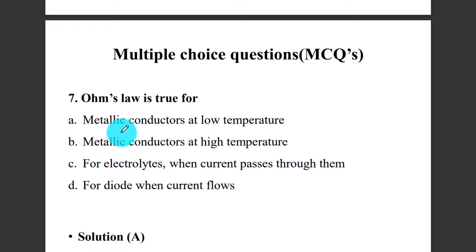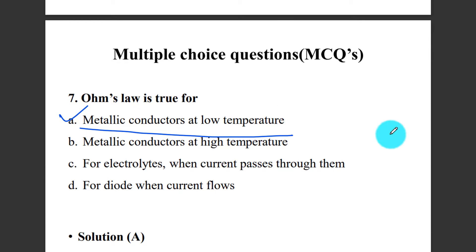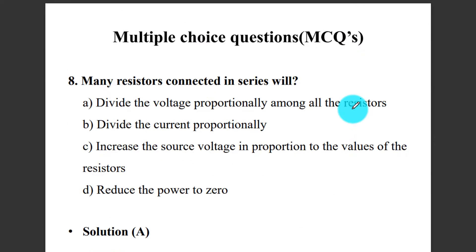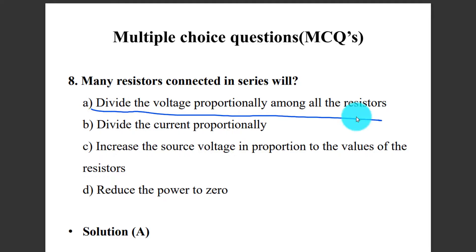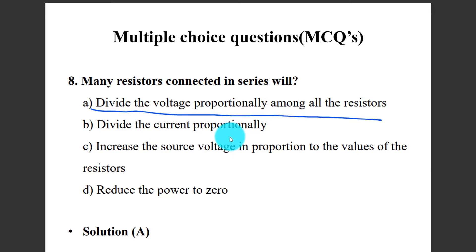The next question asks what is true for metallic conductors at low temperature versus high temperature. Also: many resistors connected in series will divide the voltage proportionally among all the resistors. In series, current stays the same but voltage divides.